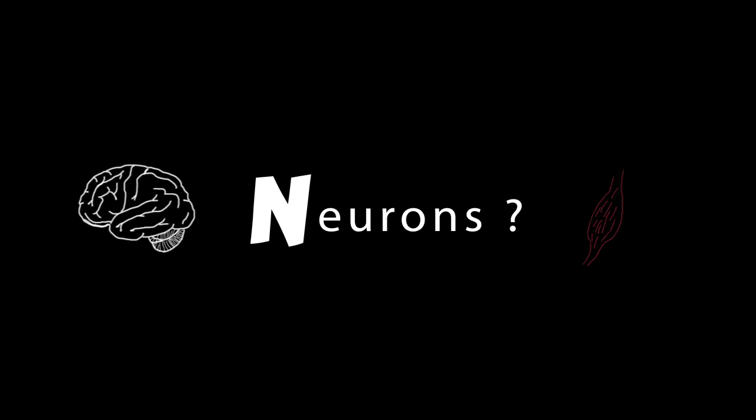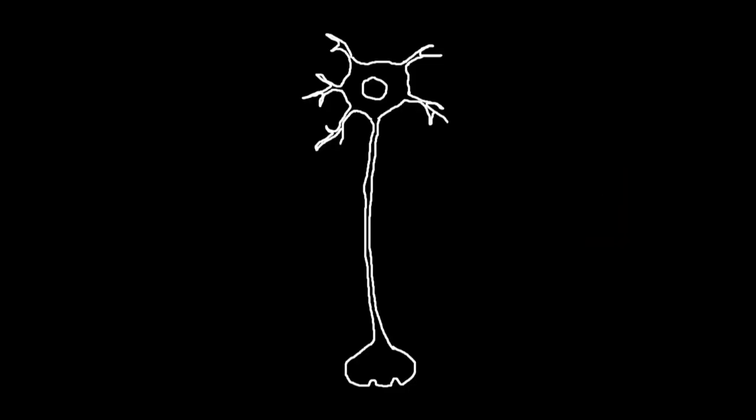A neuron is a cell, it is made of different parts. First comes the cell body containing nucleus and cytoplasm, then dendrites, the axon, the membrane of the axon, and the axon terminals or synaptic button.